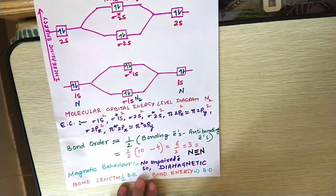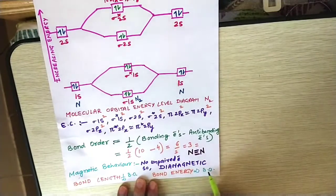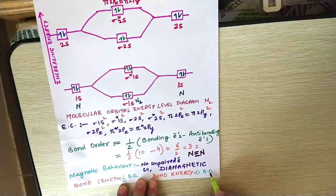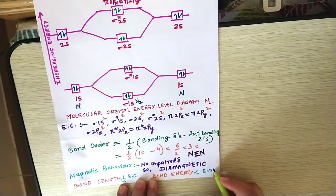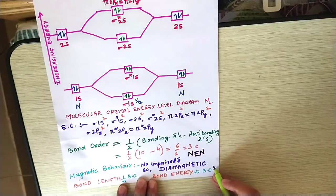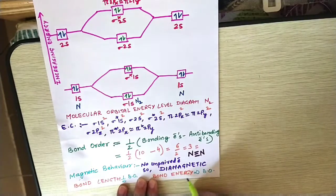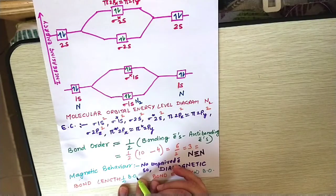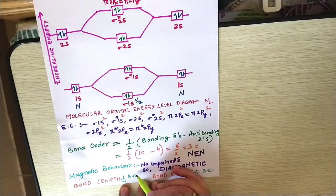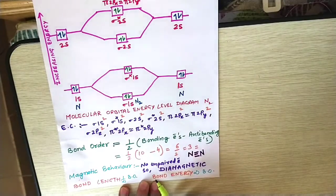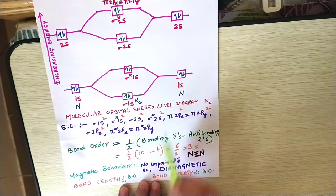So students, how is bond energy related to bond order? If bond order is more, then the strength of the bond is more and you need more energy to break the bond. So these are directly proportional with each other. And bond length is inversely proportional to bond order. So these parameters you can calculate from molecular orbital energy level diagram.